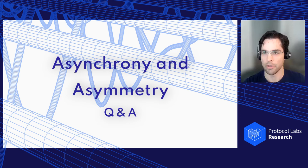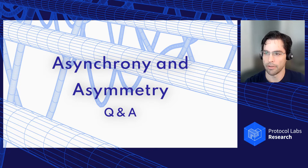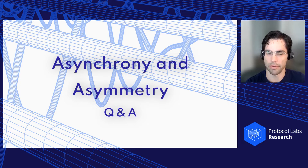We have 15 minutes for question and answer. First question is for Christian from Marco. You mentioned Stellar is similar, but not quite. How would you capture the qualitative difference? Which properties are guaranteed by asymmetric trust but not by Stellar, and vice versa?